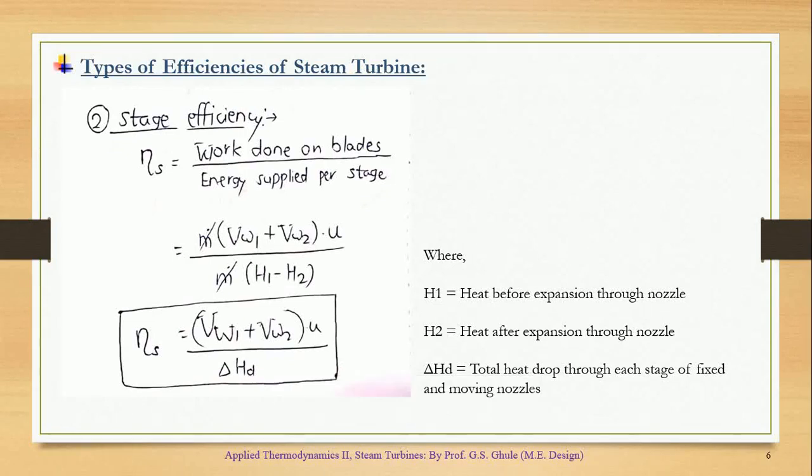Okay, so now we will understand the second efficiency, which is called stage efficiency. Now again, if you see over here, the formula for efficiency is output upon input. What is my output? It is the work done on the blades. And what is my input? It is the energy supplied in each stage.